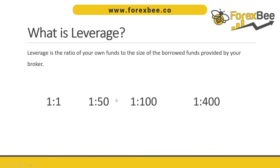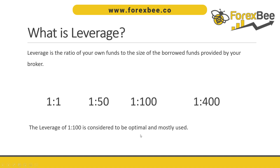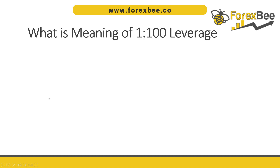There are different leverage ratios — 1:1, 1:50, 1:100, or even 1:400. Yes, some brokers do go as high as 1:400. However, 1:100 is the most commonly used leverage ratio in forex.